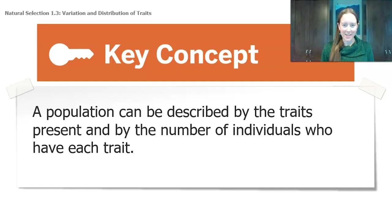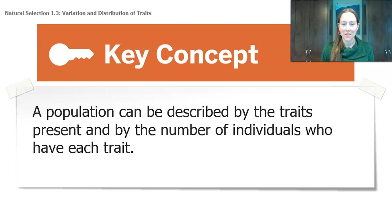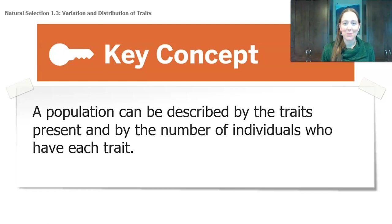We'll end today with our first key concept for natural selection: a population can be described by the traits present and by the number of individuals who have each trait. You saw this with our butterflies and their wing color variation, with our ostrilopes' different neck lengths, colors, and fur amounts, and with our thorn palms and carnathons. Anytime you're looking at a population, you're looking at what traits they have and how many individuals have each of those traits.